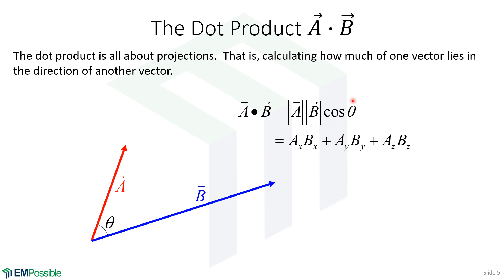We can also use the cosine equation if asked for the angle between two vectors: calculate the dot product using the component equation, then divide by the magnitudes of A and B and take the inverse cosine to find angle theta.